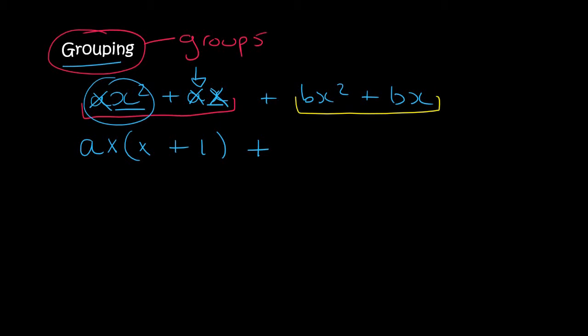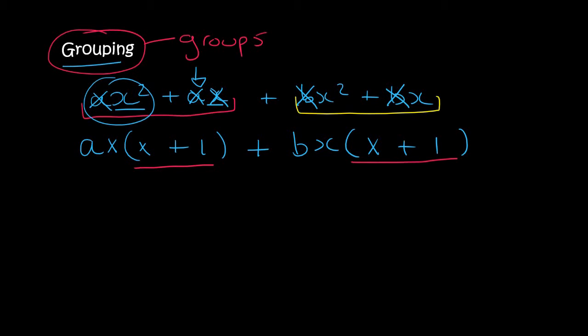Then we say plus. In this second part, there's a b in both of them, so we take that out, and then we take out one x, and you'd still be left with x plus one. How do we know if we grouped them correctly? We look at the next step. We've got x plus one and x plus one — so that is a good thing. If those were different, then we would have to start the question again and group them in different ways.